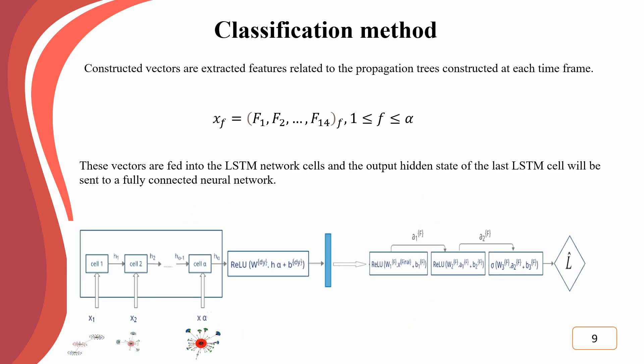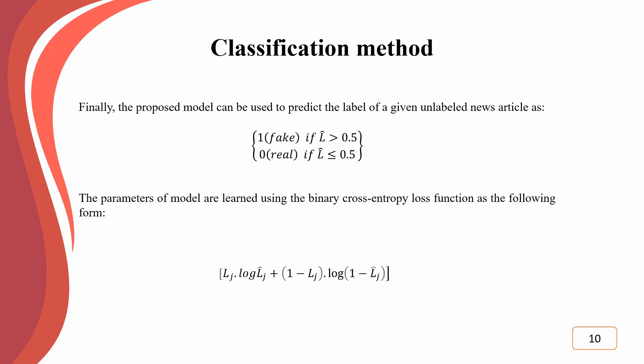After constructing alpha propagation trees over time, the related features are extracted from each propagation tree, and the resultant feature vectors are fed into the LSTM network cells. The output hidden state of the last LSTM cell, which represents the development process of the propagation tree over time, is then sent to a fully connected neural network. The output of the fully connected network is a number between 0 and 1. If the value is greater than 0.5, the news article is classified as fake; otherwise, it is considered real.